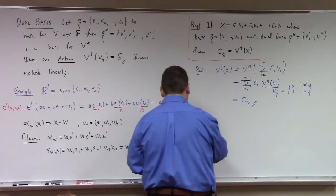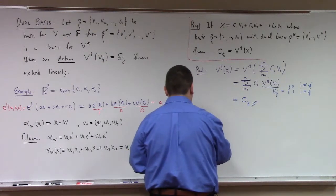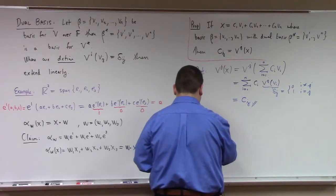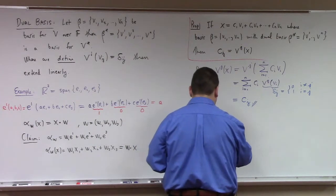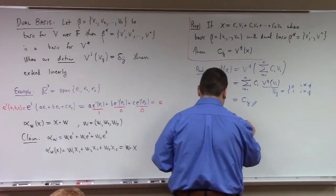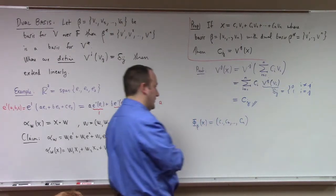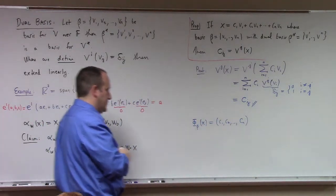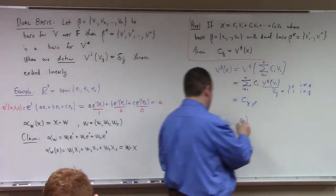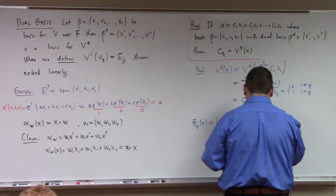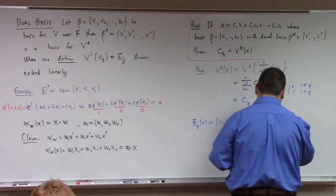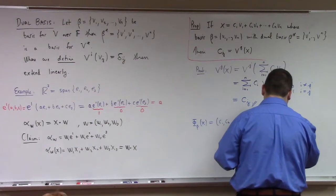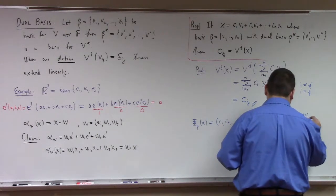Notice that the coordinate map φ_β of x equals (c₁, c₂, ..., cₙ), which is equal to (v^1(x), v^2(x), ..., v^n(x)). This goes to show what I claimed at the end of last class: the coordinate map φ_β has component functions given by the dual basis elements v^1, v^2, ..., v^n.